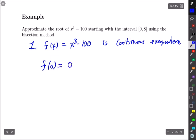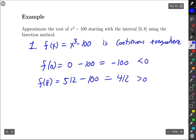f(0) = 0 - 100 = -100. f(8) = 512 - 100 = 412. That one's negative. That one's positive. We're in good shape. Now I want to apply the bisection method to this.